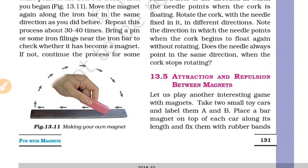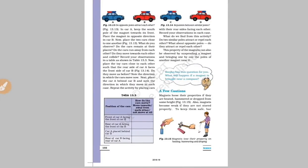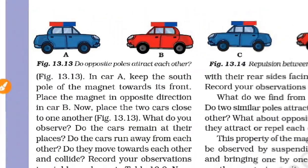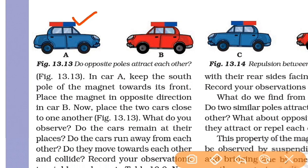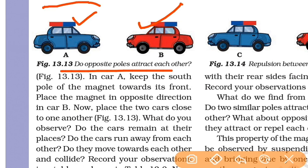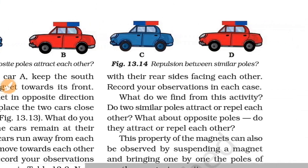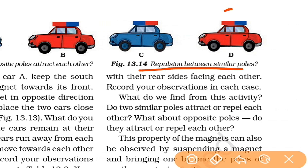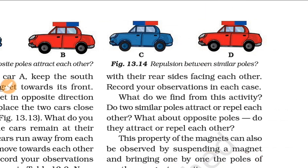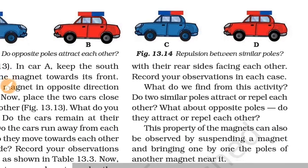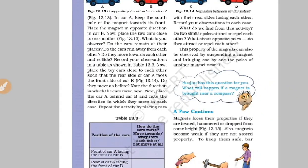This is attraction and repulsion between magnets — very simple. Same poles and opposite poles behave differently. Opposite poles attract each other. Same poles repel each other. These are the attractions and repulsions between magnets.